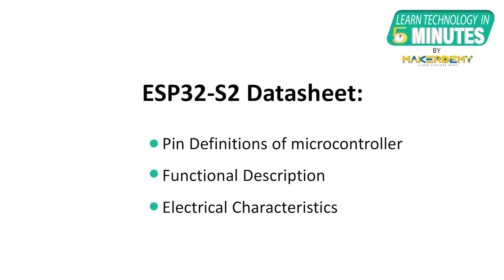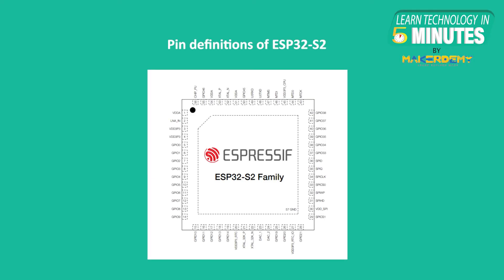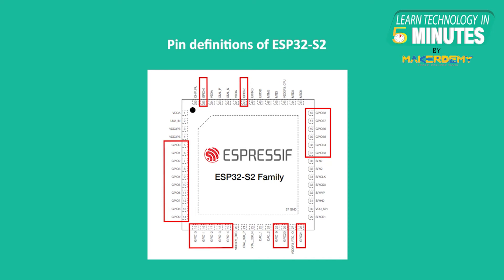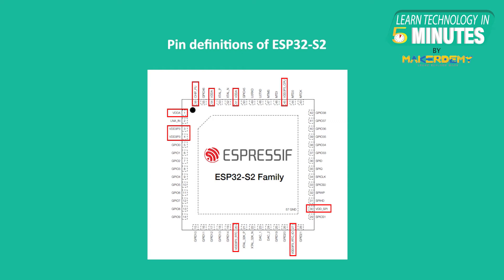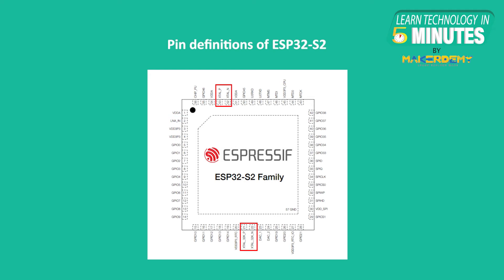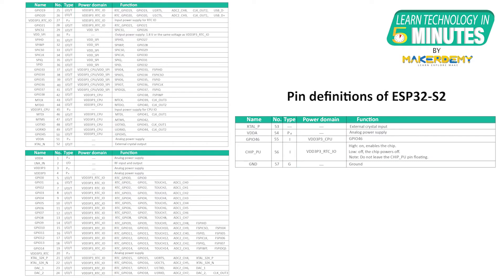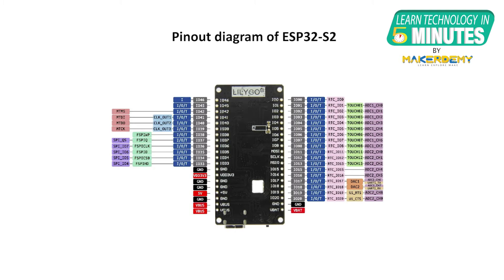The ESP32-S2 data sheet primarily covers three topics: pin definitions of the microcontroller, the functional description, and its electrical characteristics. The ESP32-S2 family pin layout shows it is a 56-pin integrated circuit, among which 43 pins are programmable GPIOs. The other pins include analog power supply pins, the RF input and output pin, and the external crystal output pin. A table lists pin descriptions along with their functions, power domain specifications, and which GPIO pins are analog or digital.